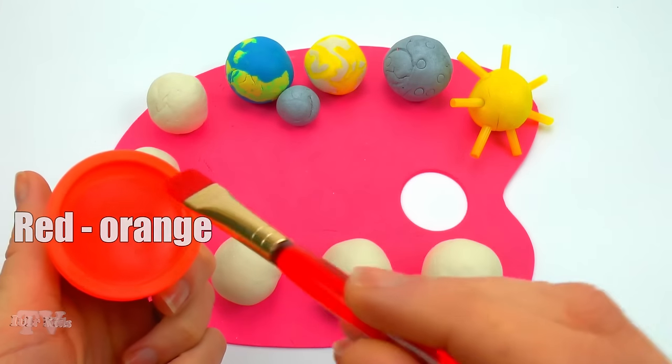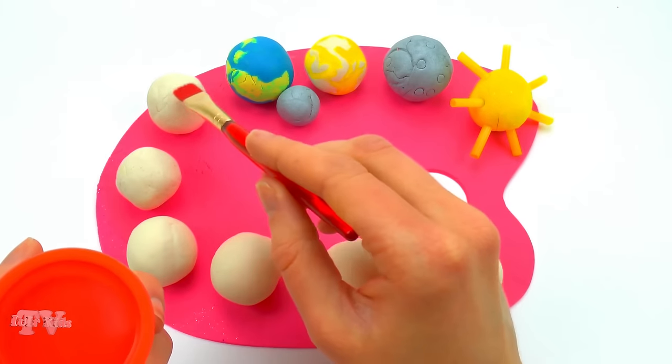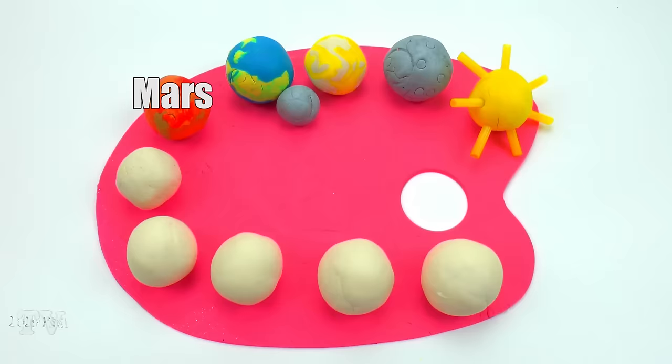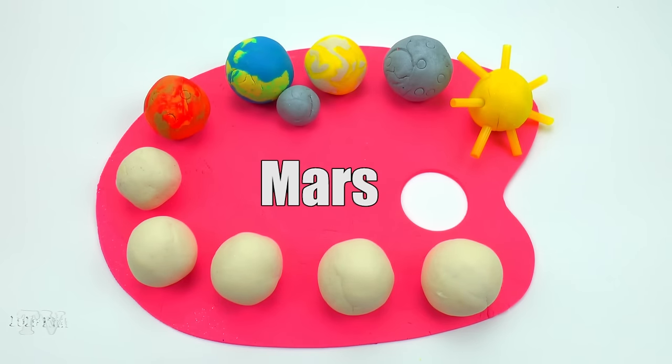Red and orange. Mars. Mars is the fourth planet in the distance from the sun.